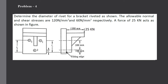This is the problem we will be solving. Determine the diameter of rivet for a bracket riveted as shown. The allowable normal and shear stresses are 120 N/mm² and 60 N/mm² respectively. A force of 25 kN acts as shown in the figure. So we are trying to determine the diameter of the rivet.